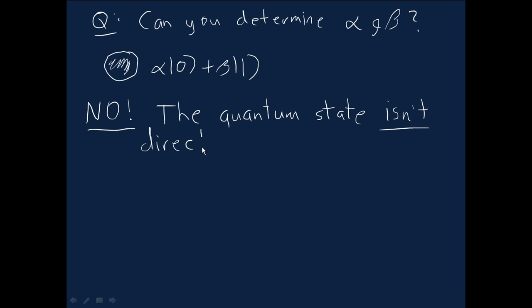There's no way we can extract the alpha and the beta. And this is a fundamental constraint on quantum mechanics and quantum information.